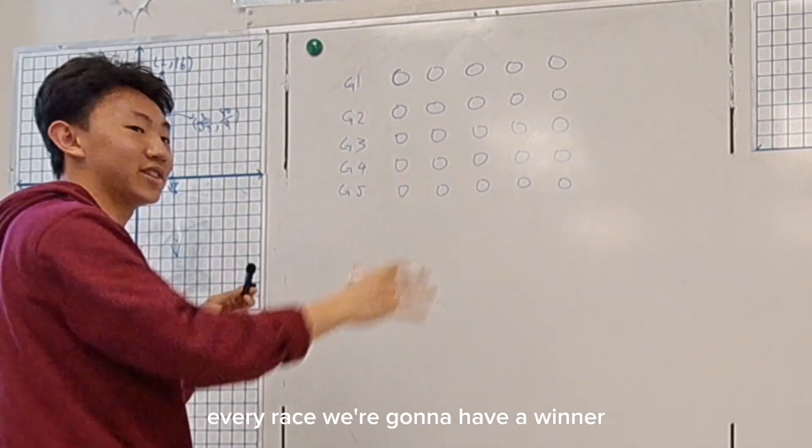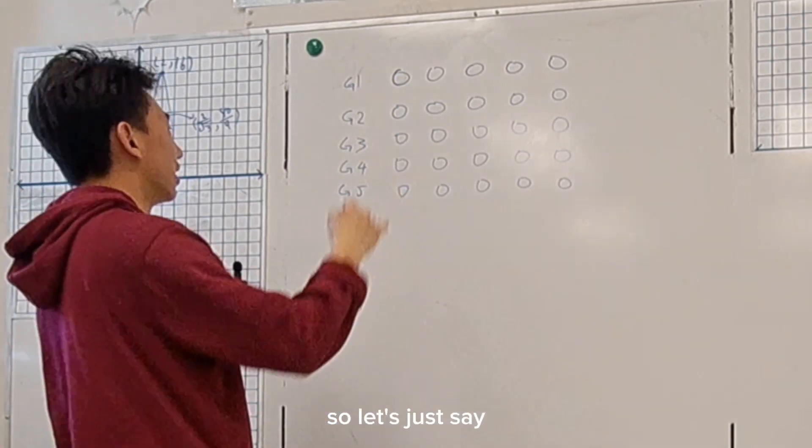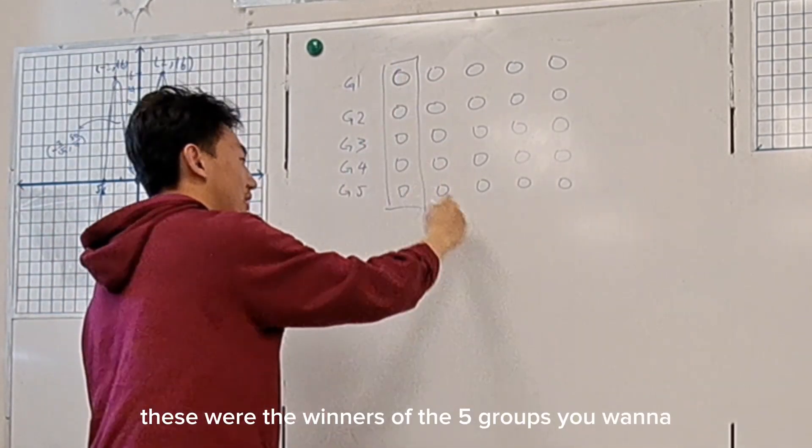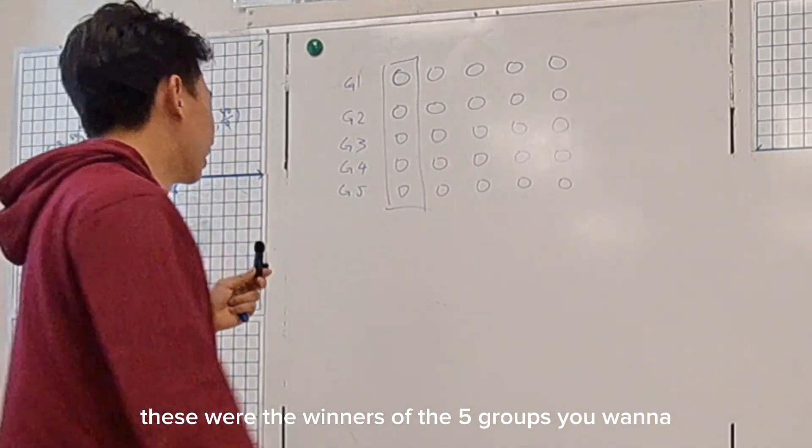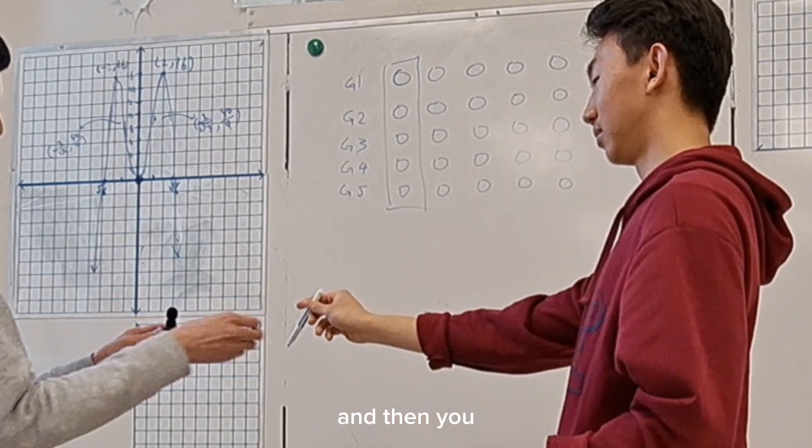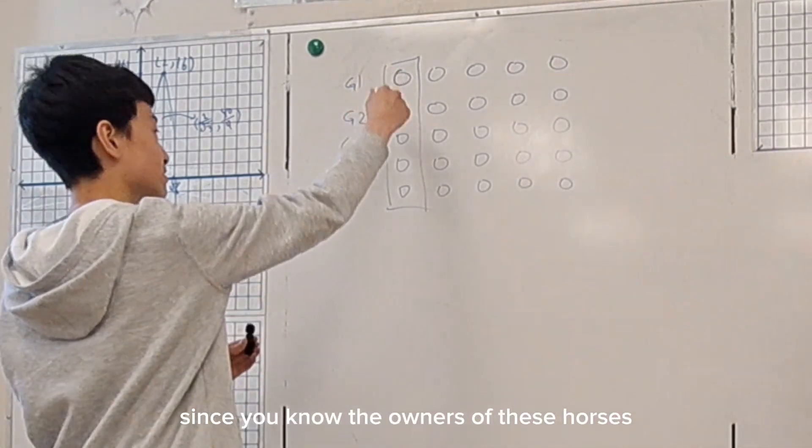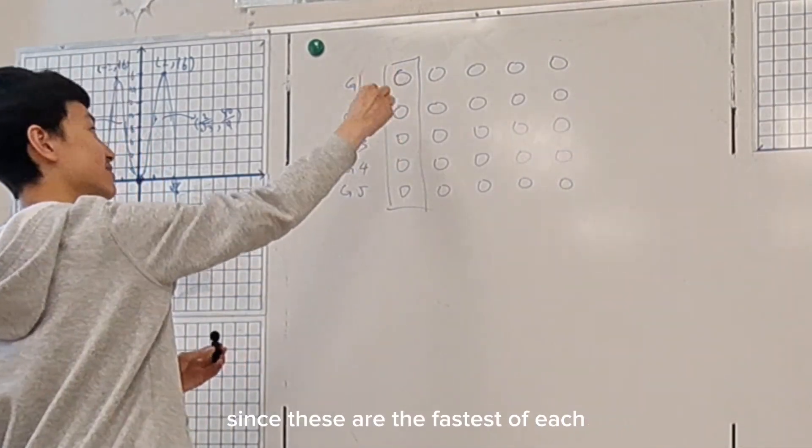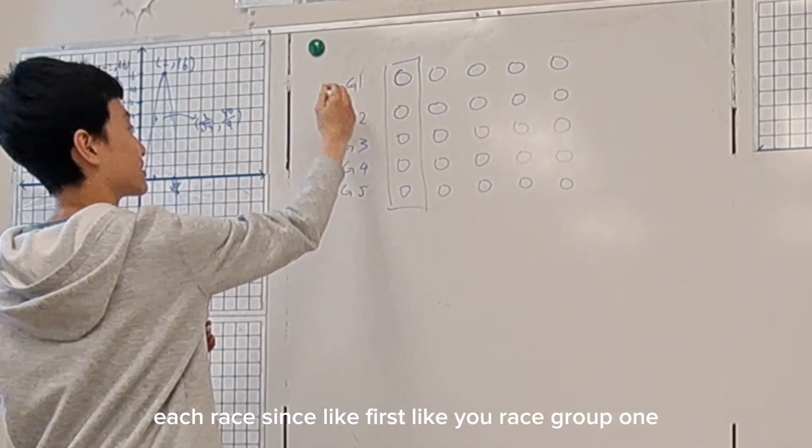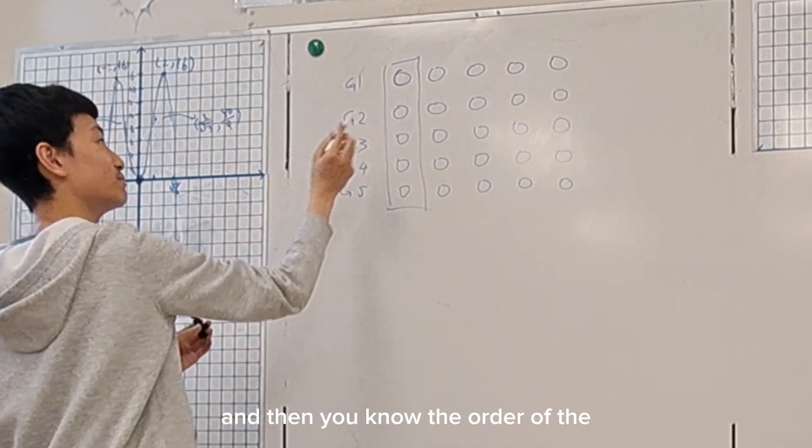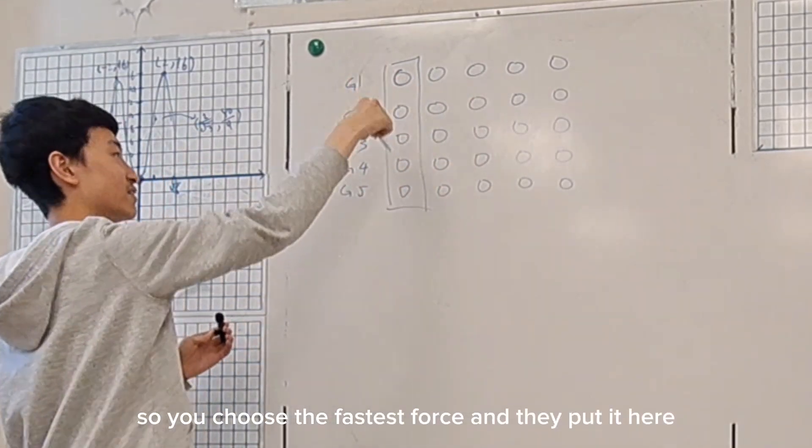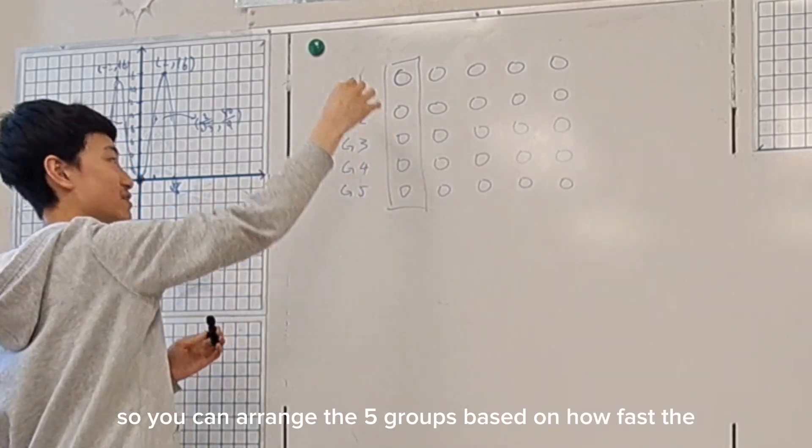Now when we race, every race we're going to have a winner. So let's just say that these were the winners of the five groups. And then, since you know the orders of these horses—since these are the fastest of each race—you race group one and then you know the order of these. So you choose the fastest horse and arrange the five groups based on how fast their fastest horses are.